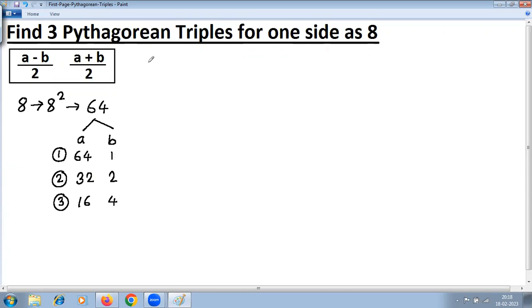So with this, we'll get three Pythagorean triples using this formula. Let's substitute first values a as 64, b as 1. 64 minus 1 upon 2, and then 64 plus 1 upon 2. This will give you 63 upon 2, and this will give you 65 upon 2. So 63 upon 2, that is half of 63, will be 31.5, and half of 65 is 32.5.